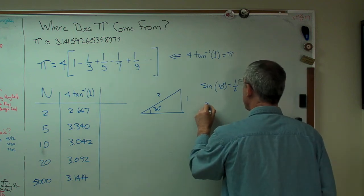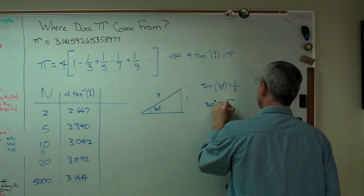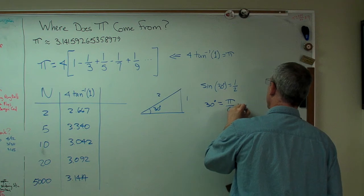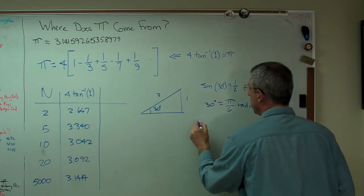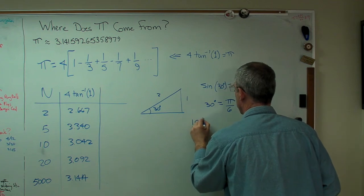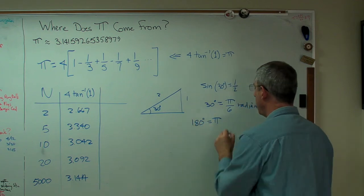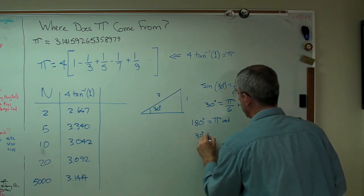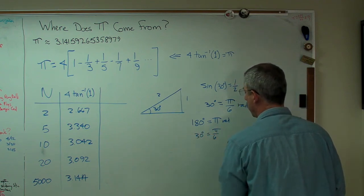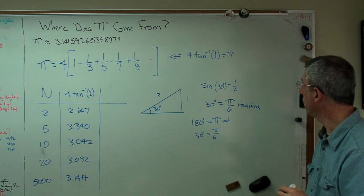But we know that the sine of 30 degrees is 1 half, but we also know that 30 degrees is pi over 6 radians. Because there's 180 degrees is pi radians. So 30 degrees must be pi over 6. That's what's going on here.